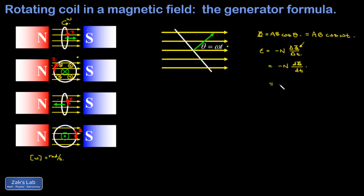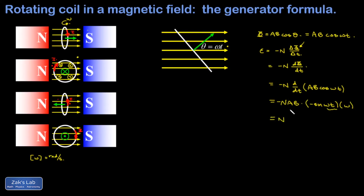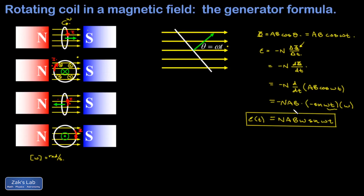The induced voltage is given by negative N times the time derivative of AB cosine ωt. A and B are constants and move outside the derivative. The time derivative of cosine ωt is negative sine ωt, and the chain rule adds a factor of ω — the derivative of ωt with respect to t. This gives the induced EMF as a function of time: ε = NABω sine ωt. This confirms that for a loop rotating at constant rate in a magnetic field, the induced voltage is indeed sinusoidal — the natural output of an electric generator.